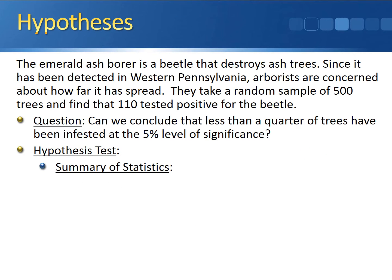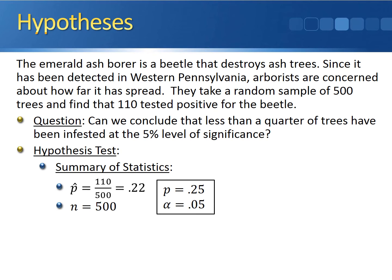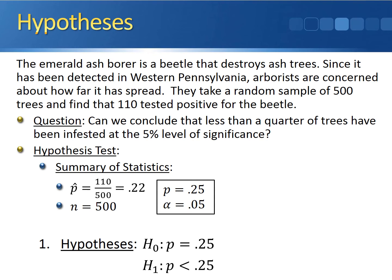Let's recap all of the information we have so far. P-hat, our sample proportion, is 110 divided by 500 — the number of trees that tested positive divided by the total sample size — giving us 0.22. Our sample size is 500. The hypothesized proportion is 0.25, and we're doing this at the 5% level of significance. For the hypotheses: the null hypothesis is P equal to 0.25. Since we want to see if less than a quarter of trees have been infested, the alternative hypothesis is P less than 0.25.